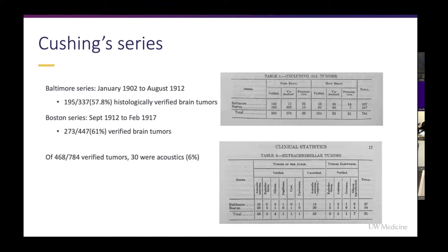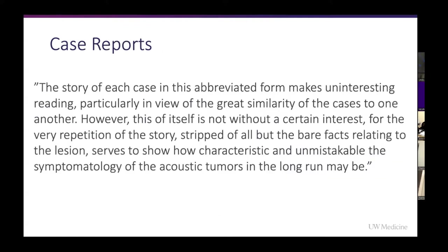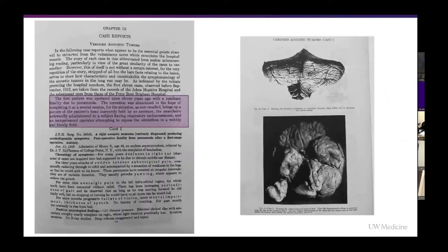Cushing's series comprised the Baltimore series from 1902 to 1912 and the Boston series from 1912 to 1917. Because pathology at the time couldn't identify all tumors, he included only verifiable acoustics — 30 total, 10 from Baltimore and 20 from Boston. He writes that reading each case report individually is not interesting, but the repetition shows how characteristic and unmistakable the symptoms of these tumors are. I wanted to review some of the early techniques he developed and the mentality of Cushing at the time, as many have been passed down through neurosurgical training.